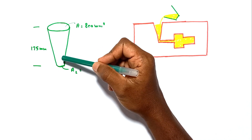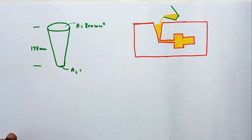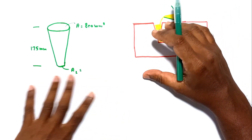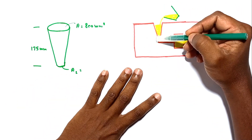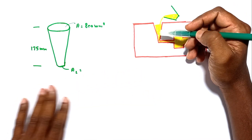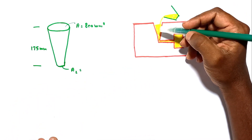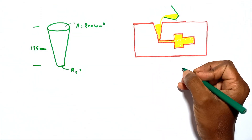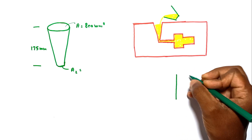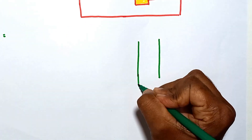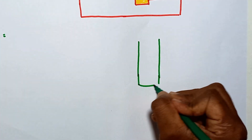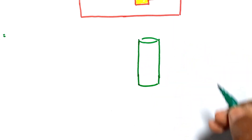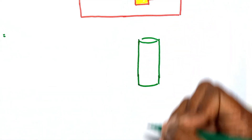In this problem we have to find the bottom surface area of the sprue to avoid aspiration of the mold. First, let's understand what is meant by aspiration in pouring molten metal. Every sprue has a conical shape — why? To avoid aspiration. If there is no conical shape, and instead the sprue has a straight cylindrical shape, let's examine what happens.